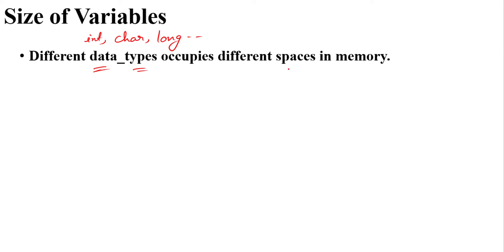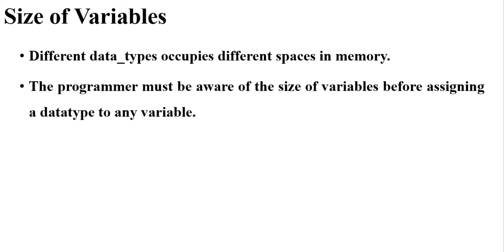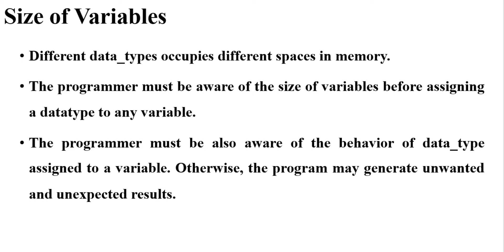These data types occupy space in the memory of your computer or any embedded system. Different data types occupy different spaces in memory. Any programmer using these data types must be aware of their sizes and behavior before using them, otherwise the program may generate unwanted and unexpected results. So beforehand we must know about the different data types, their sizes and their behaviors.